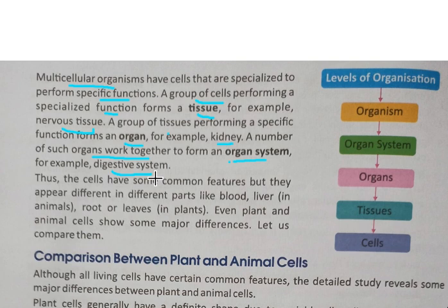An example of an organ system is the digestive system. In the digestive system, there are many organs: mouth, esophagus, stomach, small intestine, and large intestine. These are all organs that together make up the digestive system, which is an organ system.